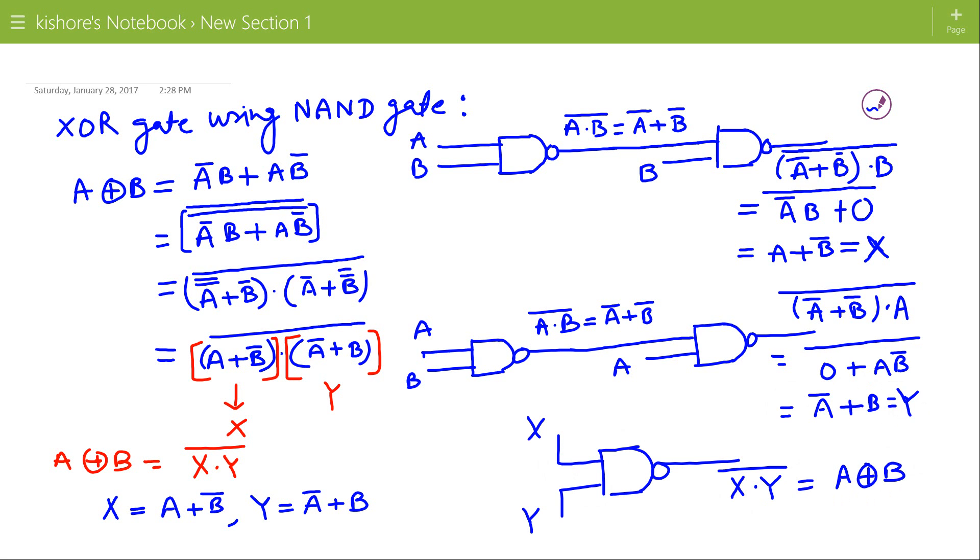So here we can see to realize X we have used 2 NAND gates and to realize Y again we have used 2 NAND gates. So this is 3rd and 4th and for NAND operation of X and Y one more NAND gate is used.